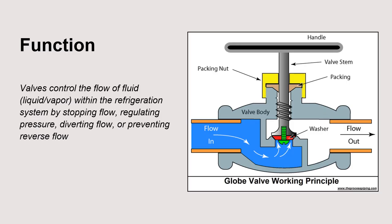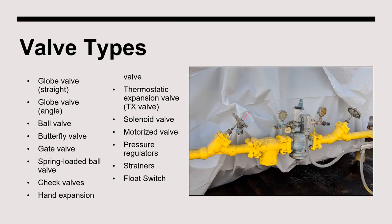The purpose of a valve is to control the flow of fluid within a refrigeration system by stopping flow, regulating pressure, diverting flow, or preventing reverse flow. Under normal conditions, valves within a refrigeration system can contain pressurized liquid ammonia, vapor ammonia, or oil. Valves related to a refrigeration system can also contain glycol, water, caustic solutions, or beverages meant for consumption. There are many types and variations of refrigeration valves, and each can have a unique purpose.